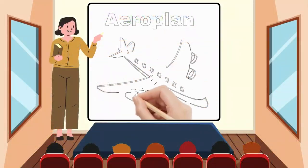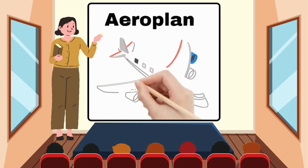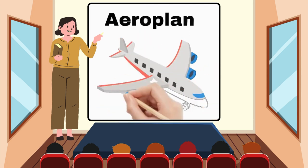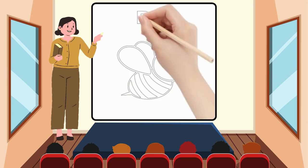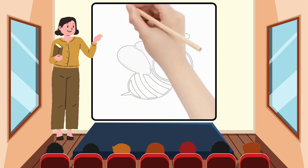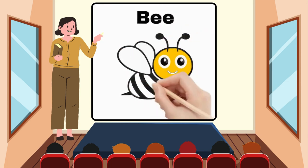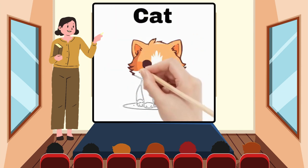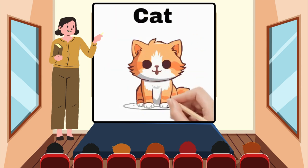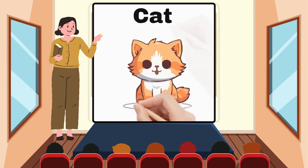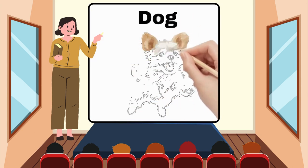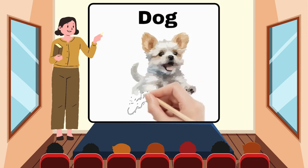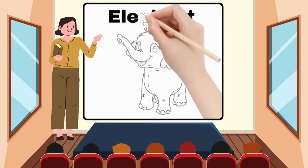A for Airplane. B for Bee. C for Cat. D for Dog. E for Elephant.